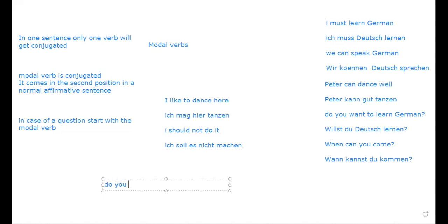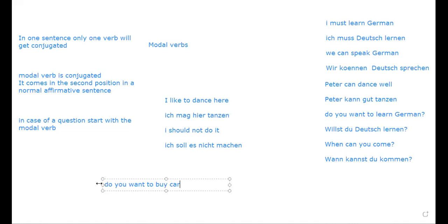For example: 'Do you want to buy a car?' To make this question, we start with the modal verb — 'wollen' conjugated as 'willst' for 'du' — then the subject, and the second verb 'kaufen' goes to the end. In formal form with 'Sie': whenever we form yes/no questions, we start with the modal verb.